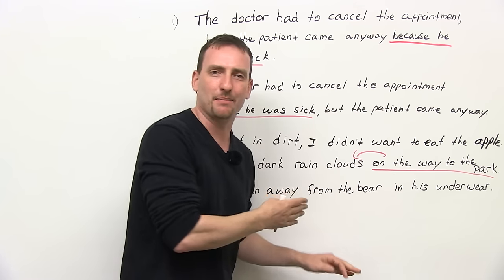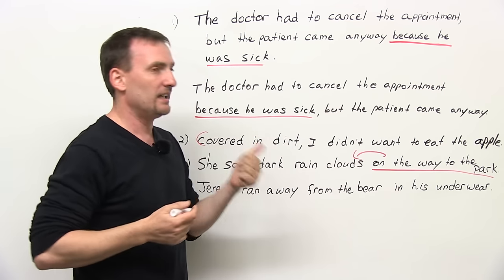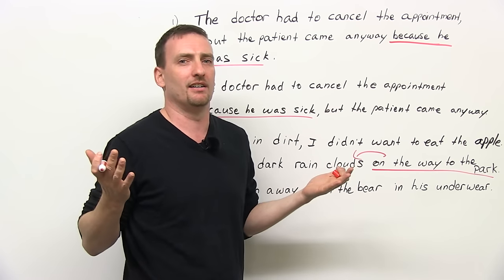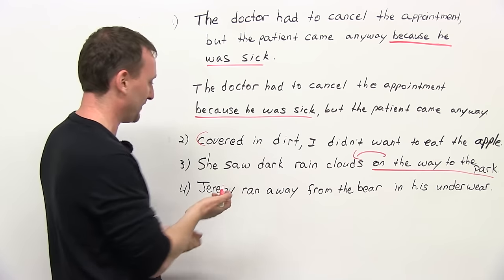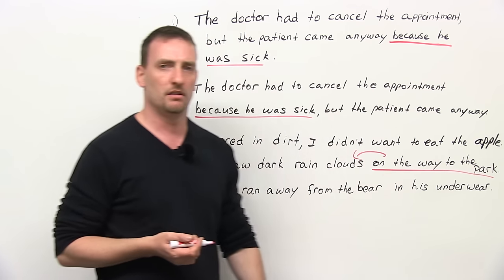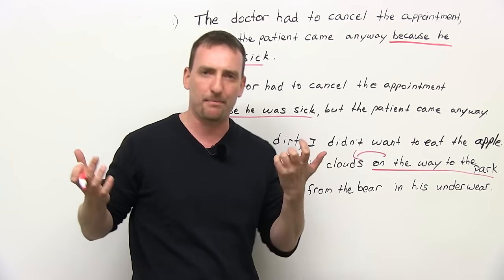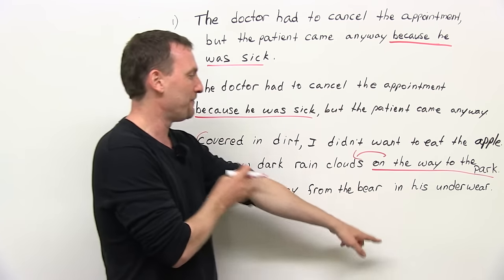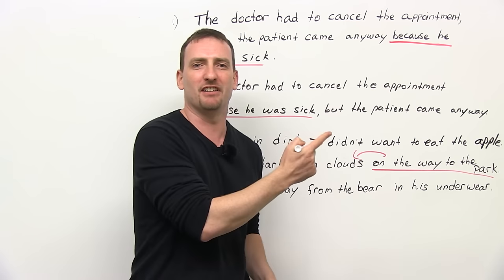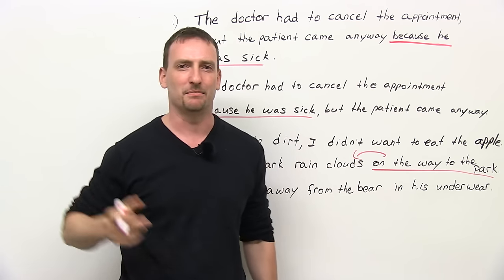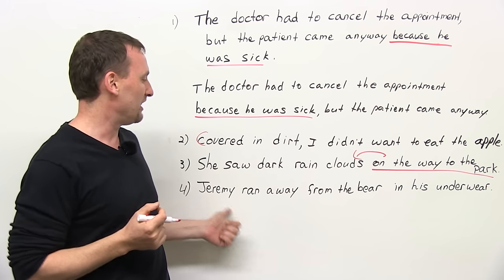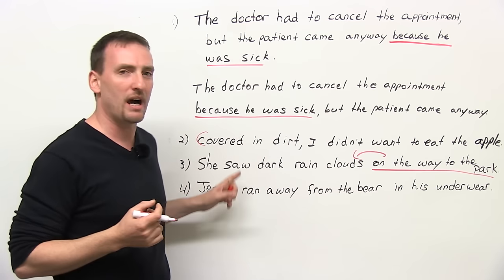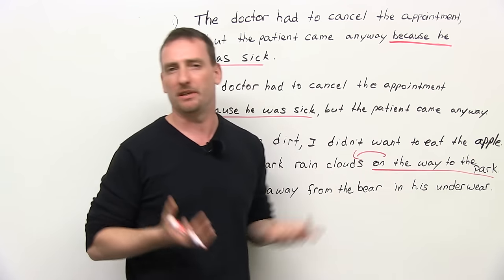I borrowed this last example from Groucho Marx. He said, 'Once I shot an elephant in my pajamas. How I got into my pajamas, I have no idea.' So that's a funny joke if you understand what he's talking about. So let's look at this one: 'Jeremy ran away from the bear in his underwear.' What you said here is that the bear is wearing the underwear and Jeremy's running because of that. 'Jeremy ran away from the bear while in his underwear' makes a bit more sense, but 'while still in his underwear, Jeremy ran away from the bear' would be the best solution.